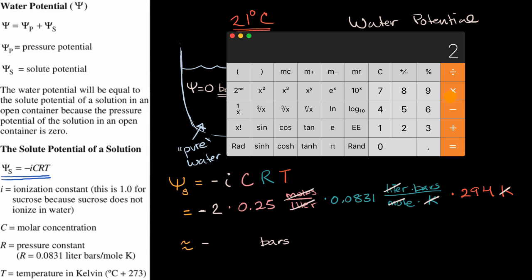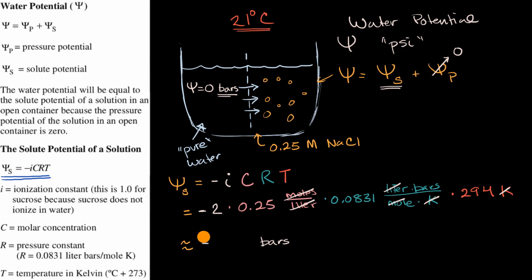And so let me get a calculator out. We already have the negative, so it's going to be 2 times 0.25 times 0.0831 times 294 equals—and I'll just round to one decimal place—12.2, but I have that negative there. So approximately negative 12.2 bars. So our solute potential over here is negative 12.2 bars, or it's approximately equal to that, and that's going to be equal to our total water potential because the pressure potential is zero.